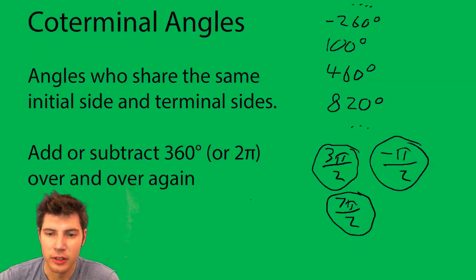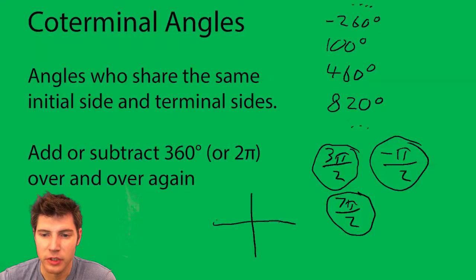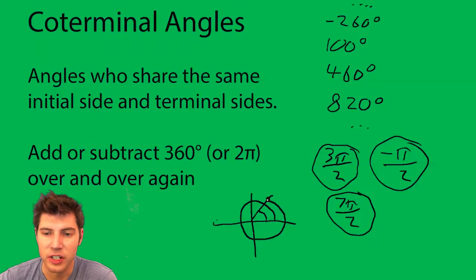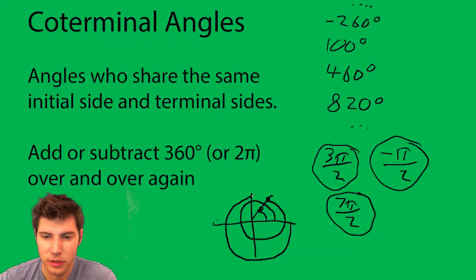Visually, the way it works is: if your first angle is here, the second angle is if you add 360, you go all the way around but it finishes at the same spot. Or you could go backwards, and it also finishes in the same spot.